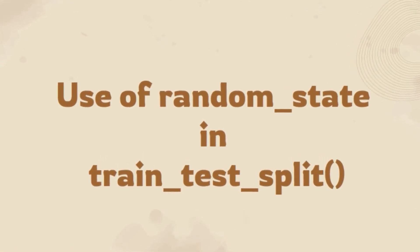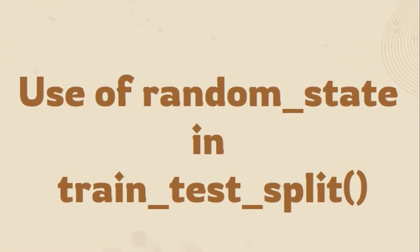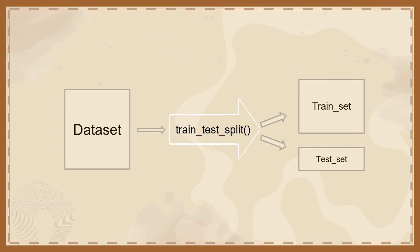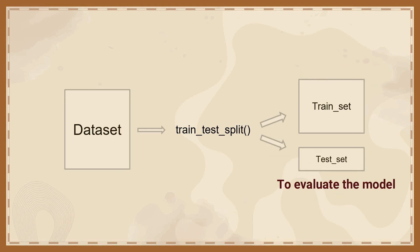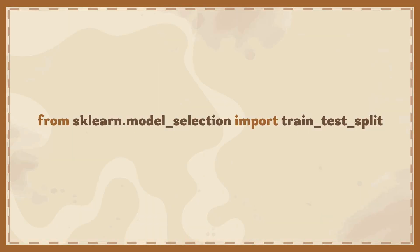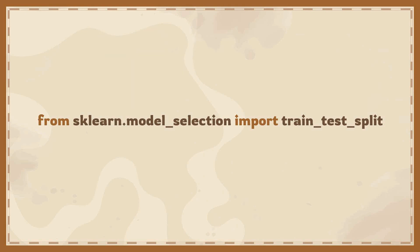This video covers the use of the random_state parameter with the train_test_split function. The train_test_split function is used to split the dataset into random train and test subsets. After the splitting, the training subset is used to build the model, and the testing subset is used for the evaluation of model performance. To use the train_test_split function, we need to import it from the model_selection module of the sklearn library.